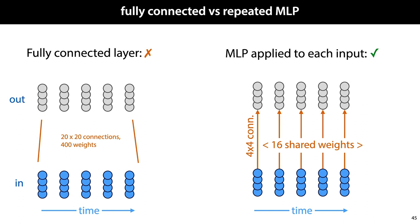If we see an input with a given length, we can take the layer, keep the weights the same, but configure the layer to accept a sequence of the required length.